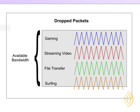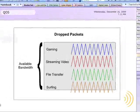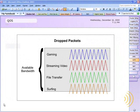QoS is implemented in a variety of different ways on different routers, but it all boils down to the same thing: we're simply trying to give priority to certain activities on our network over others. So let's have a look at some of the implementations of QoS on our routers.